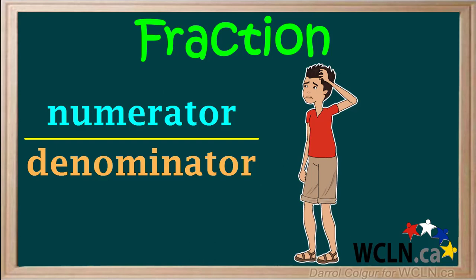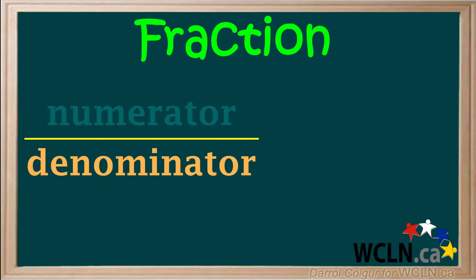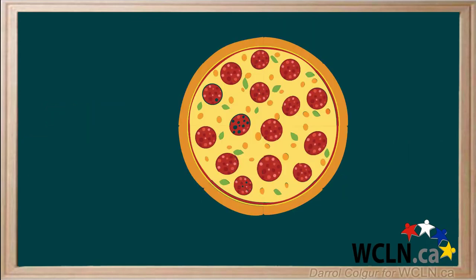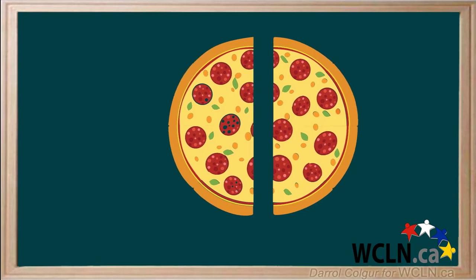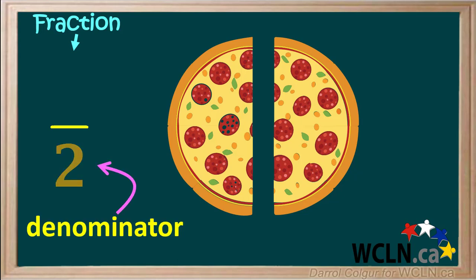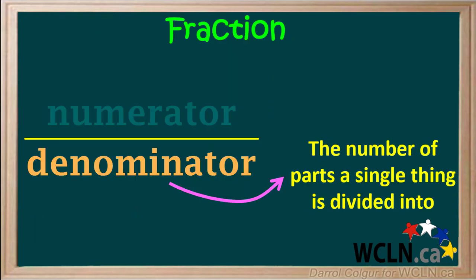But what do these things mean? The denominator is the number of parts a single thing is divided into. Let's say we have a whole pizza, and we divide it into two parts. Here we can write a fraction for which the denominator is two. This is because the pizza is divided into two parts. To review, the denominator is the number of parts a single thing is divided into.